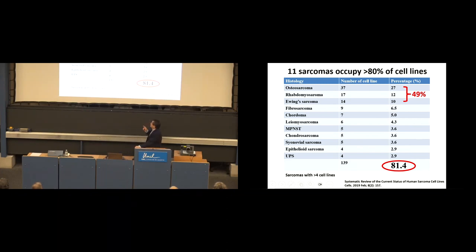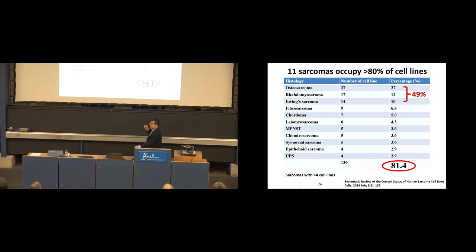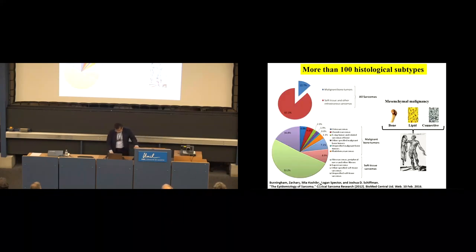This slide summarizes the histological classification of sarcoma cell lines and how many cell lines are established for each type. The top three sarcomas — osteosarcoma, rhabdomyosarcoma, and Ewing sarcoma — have many cell lines, while others have just several, and some sarcomas outside this list have no cell lines at all. When we investigate those sarcomas, we always encounter difficulty for functional studies. Interestingly, these three top sarcomas are children's sarcomas — I think pediatricians focus on cell line establishment, or cells from children may be easier to establish in culture.